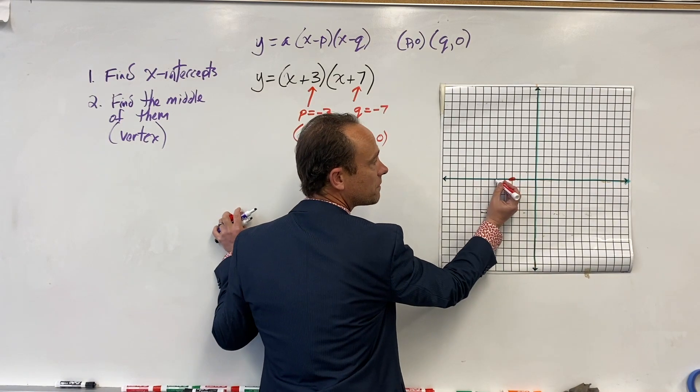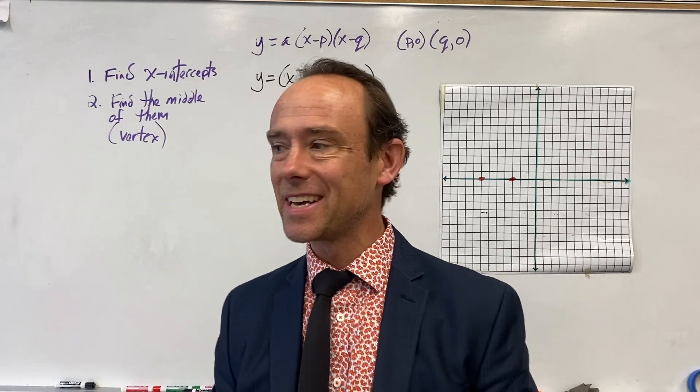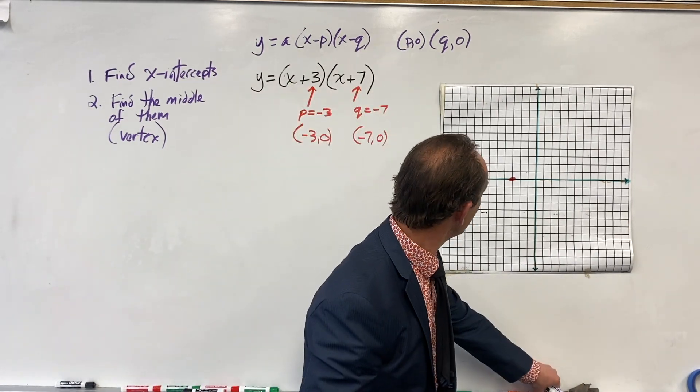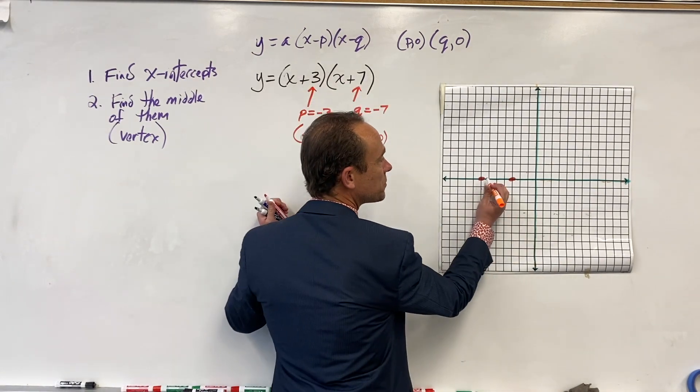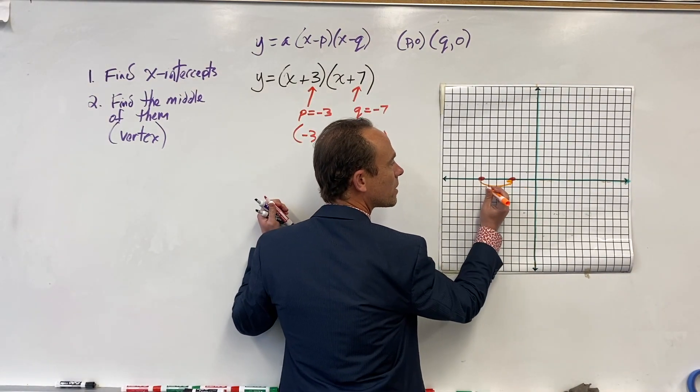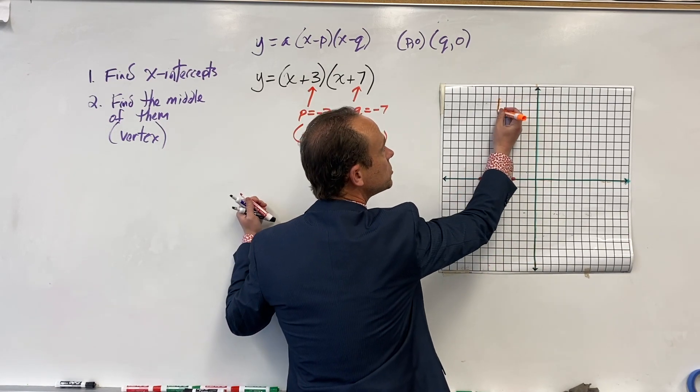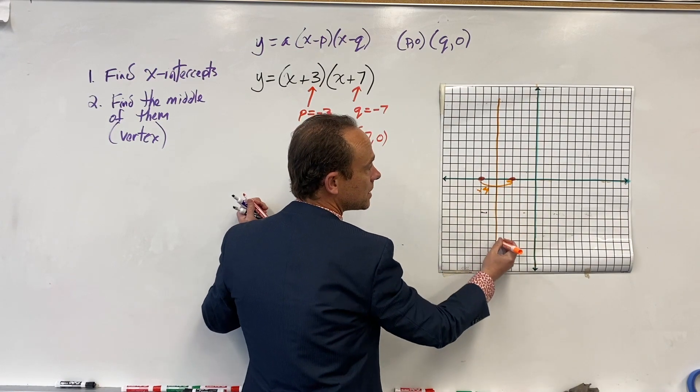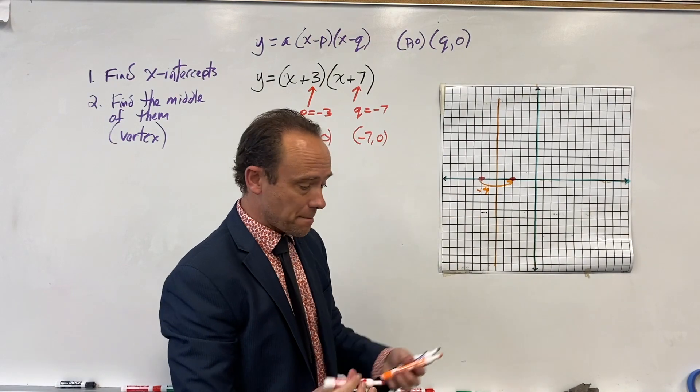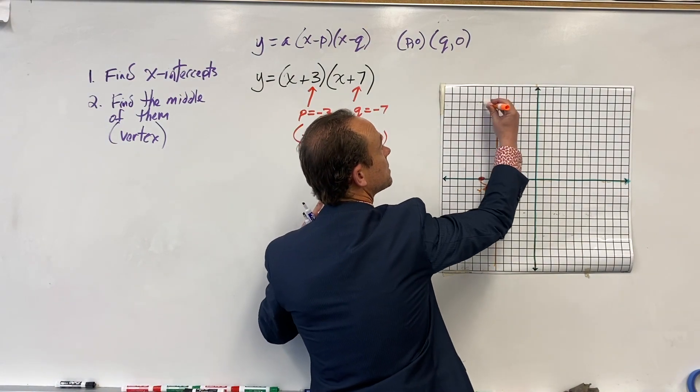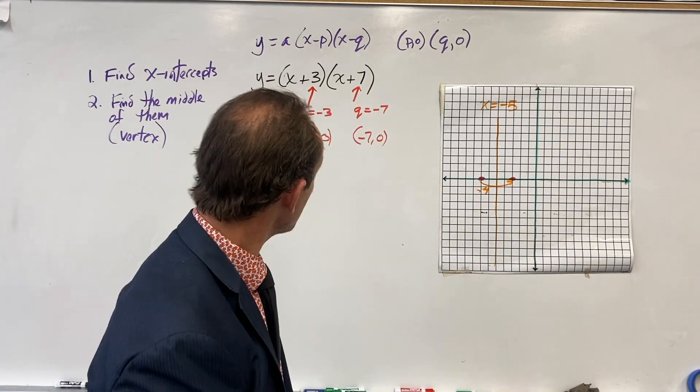We're going to go (-3, 0), put a point. (-7, 0), put a point. That means now we just got to find the vertex and we know it's got to be in the middle of those. If these are different by 4, then adding 2 must get us to the center. So the center is at x = -5.